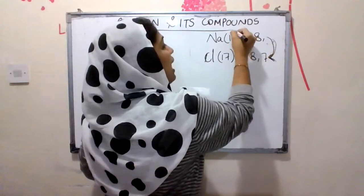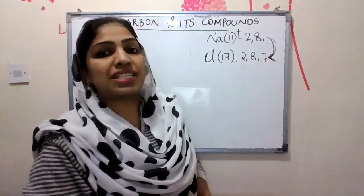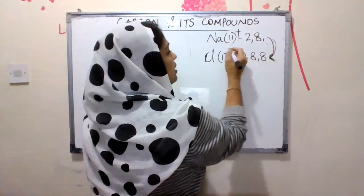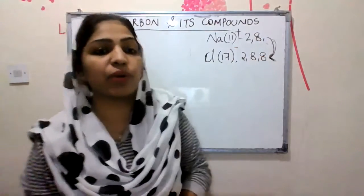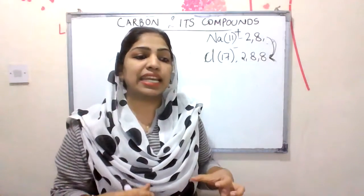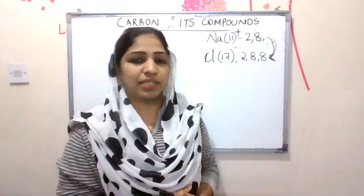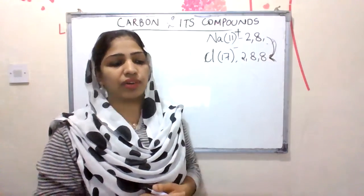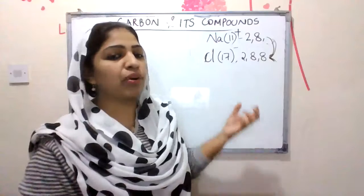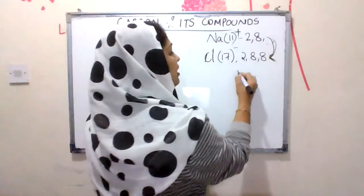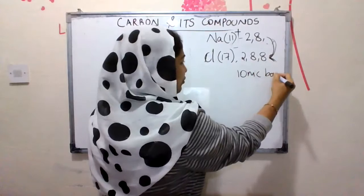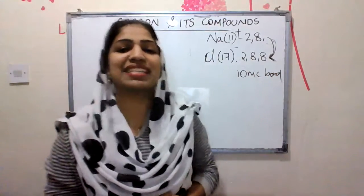Sodium will give one electron to chlorine. Sodium becomes Na+ and will become a positive ion. Chlorine accepts the electron, Cl− and will become a chloride ion. This is the transfer of electrons — electrons lose or gain. If you do lose and gain, they will become ions. This is the ionic bond.